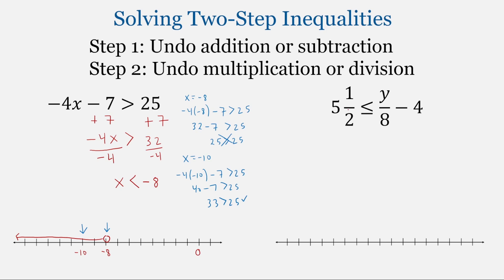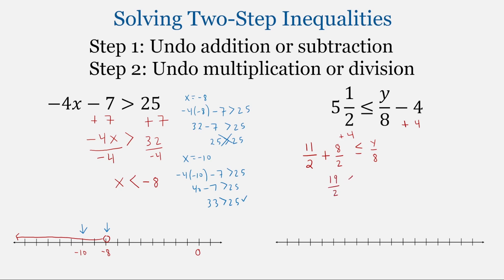In the second problem, we now have fractions, but that doesn't matter — we're going to solve this inequality in the same way. The first step is to undo the subtraction with addition, so we're going to add 4 to both sides. The first step for me when I add this is to convert the mixed number into an improper fraction. The new numerator would be 5 times 2, which is 10, plus 1, which is 11 — so 11 halves. And then we're going to add 4, which is the same as 8 halves, so we now have a common denominator. Adding gives us 19 halves, less than or equal to y over 8. We have now undone that subtraction.